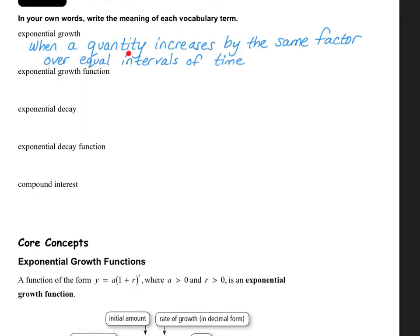Exponential growth is when a quantity increases by the same factor over equal intervals of time. And exponential decay is exactly the same, except this time it's going to decrease by the same factor over equal intervals of time.